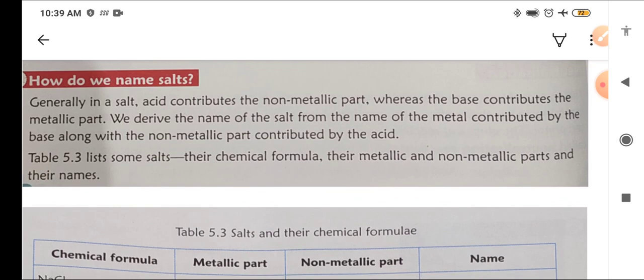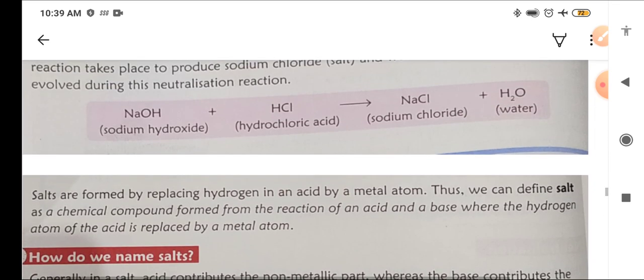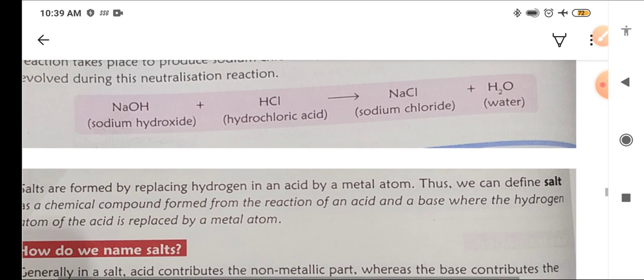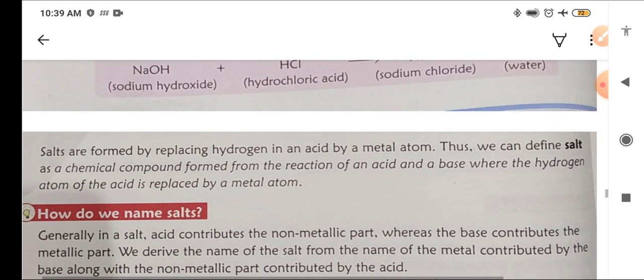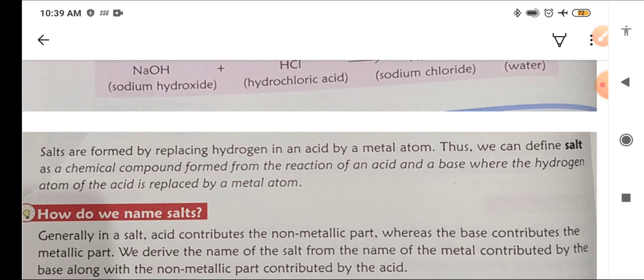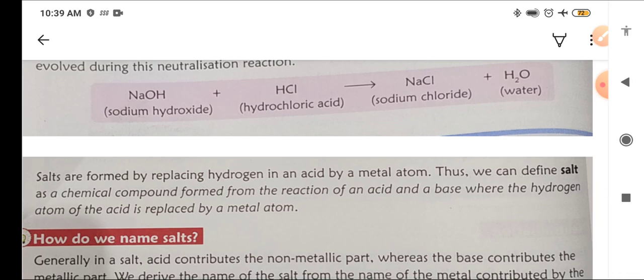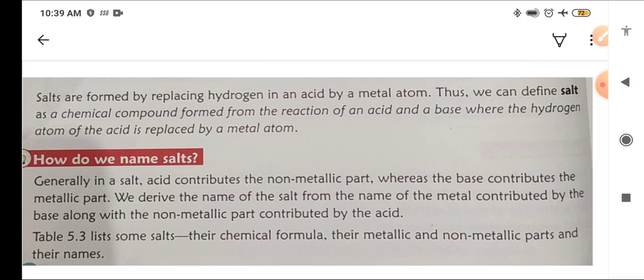Generally, in a salt, acid contributes the non-metallic part. In HCl, the non-metallic part is hydrogen, whereas the base contributes the metallic part. Sodium hydroxide gives its metal, that is sodium. We derive the name of the salt from the name of the metal contributed by the base, along with the non-metallic part contributed by the acid.